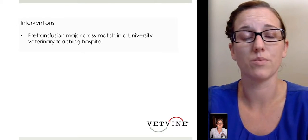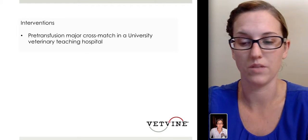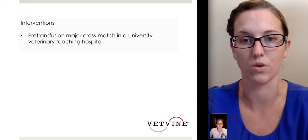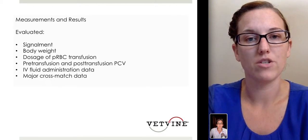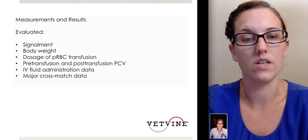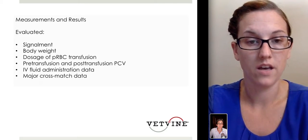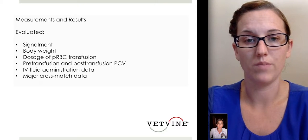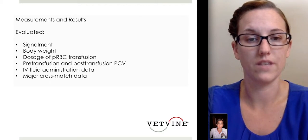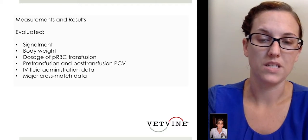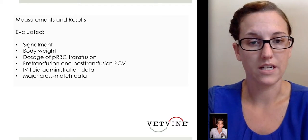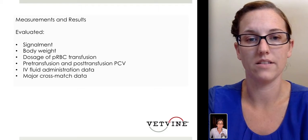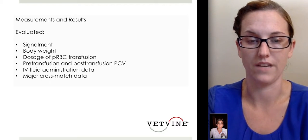The intervention in this study was the pre-transfusion major cross-match performed at a university veterinary teaching hospital — Cornell's study. Every cat was evaluated based on signalment, body weight, the dose of red blood cell transfusion given, pre-transfusion PCV, post-transfusion IV fluids during the transfusion, and the major cross-match data available.